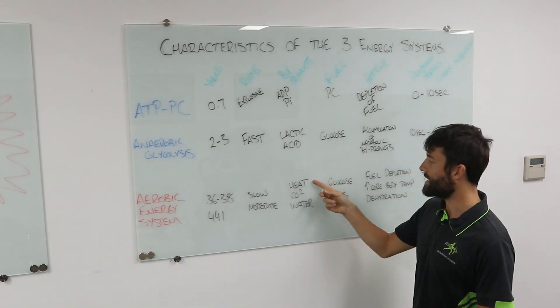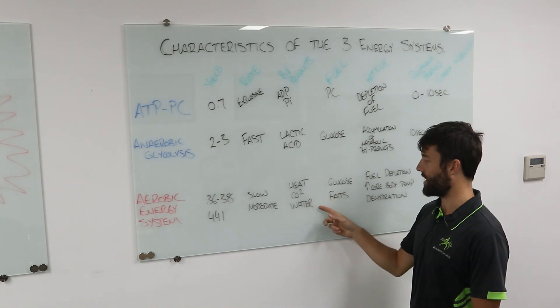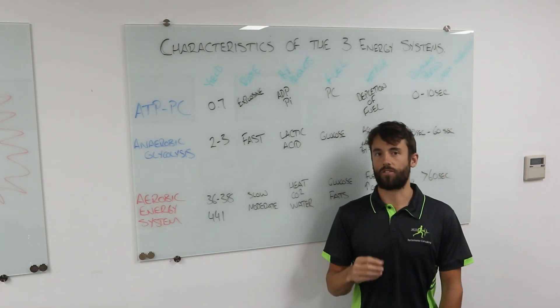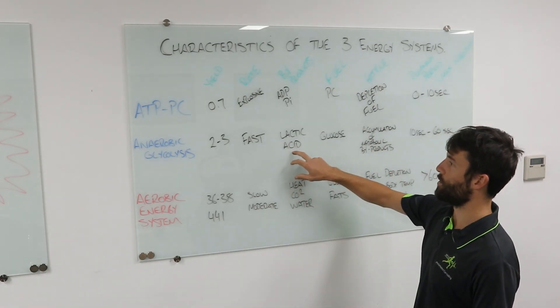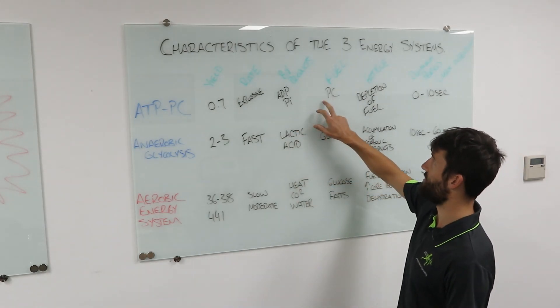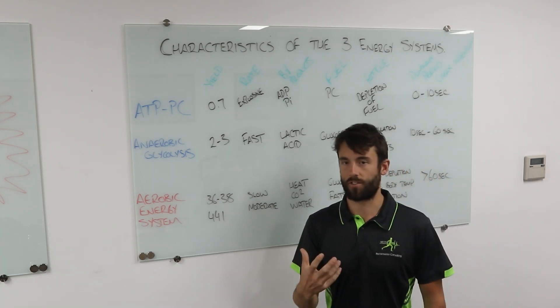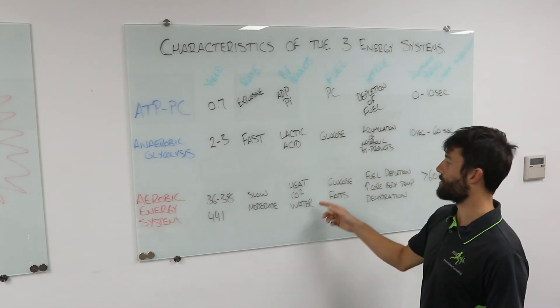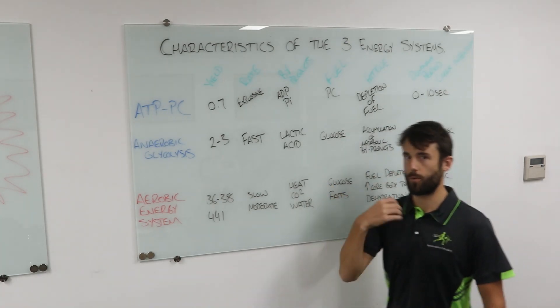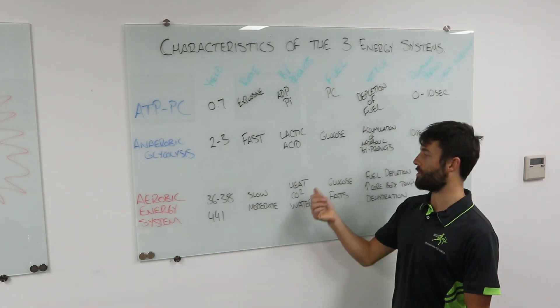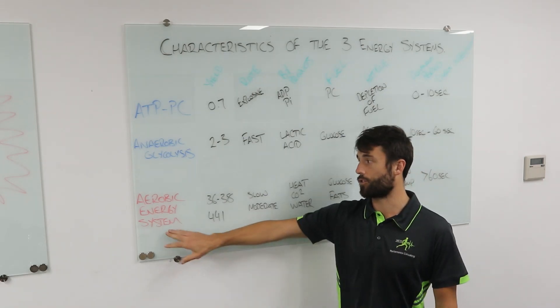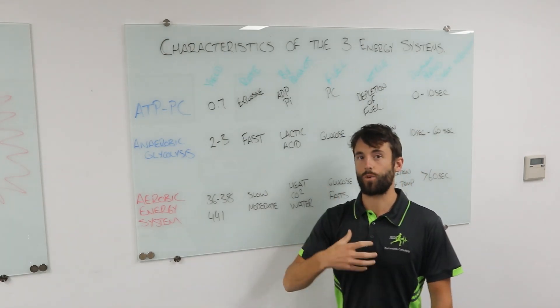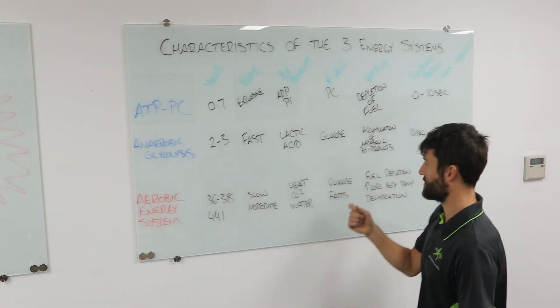This is why we like our aerobic energy system. We have three byproducts: heat, carbon dioxide, and water. We refer to these as non-fatiguing byproducts. Lactic acid is fatiguing; it will cause us to slow down. When we run out of PC, that will cause us fatigue. These three are non-fatiguing. CO2 we can breathe out, water is good for us, and heat—we can sweat, thermoregulate, keep that under control so we don't have any fatigue. We keep using our aerobic energy system, we don't have any fatiguing byproducts. That's a win.